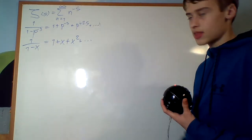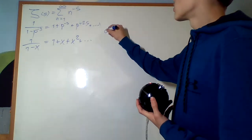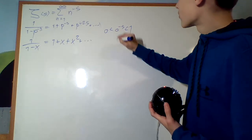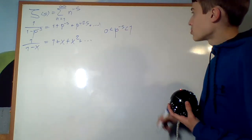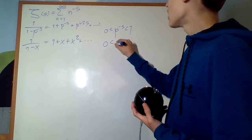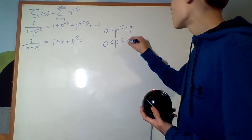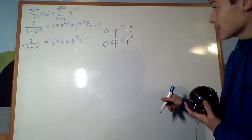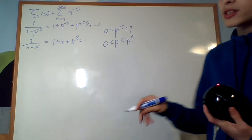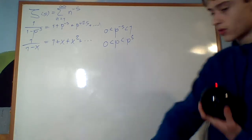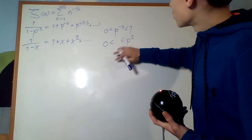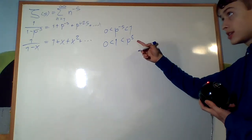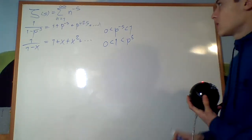This will converge for any s bigger than 1. If it's less than 1, it might converge, but we need p to the negative s to be between 0 and 1. That's true for s bigger than 0, because if I multiply both sides by p to the s, I get 0 less than p less than p to the s, which is obviously true. So we want s to be bigger than 1 for this to be guaranteed.